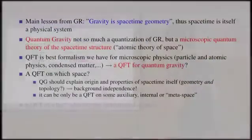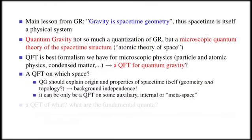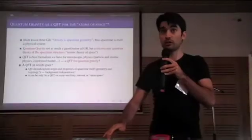In fact, quantum gravity should explain the origin and properties of spacetime itself. This is what goes under the label of background independence. So it can only be some quantum field theory on some auxiliary or metaspace, or some internal space.